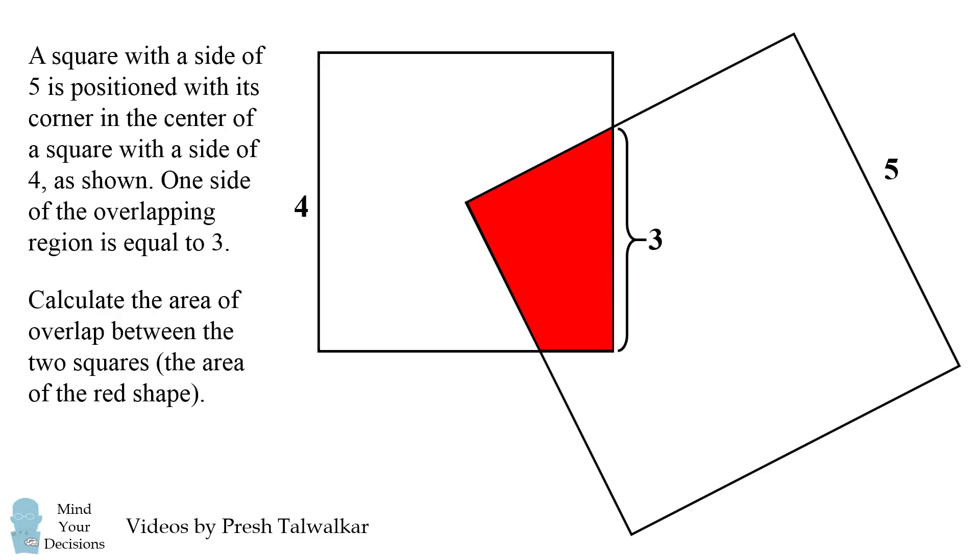The puzzle is to calculate the area of the overlap between the two squares. That is to calculate the area of the red shape.